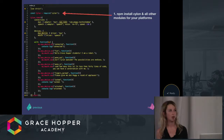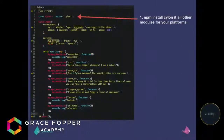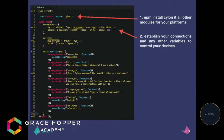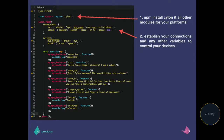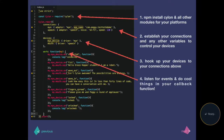First, you want to npm install Cylon and then all other modules for your platforms — they're all individual and you'll have to install them one by one. Next, you want to establish your connections and any other customization variables to control your devices, such as the type of voice or the speed. Next, you hook up your devices to your connections so you can use them in your work function. And lastly, you just listen for events and do really cool things in your callback function. Four steps and 40 lines of code — maybe even less if you take out the console logs.